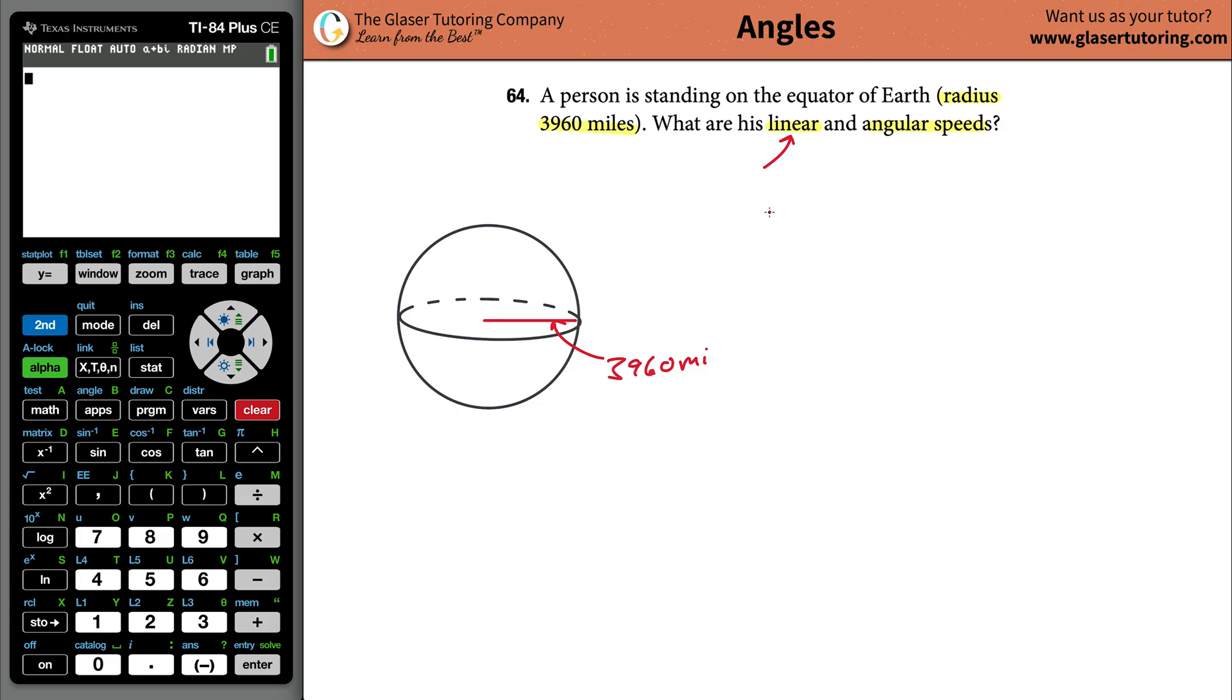Anytime you hear the word calculating a linear speed and you're talking about some object here, pretend you're at the end of this line segment, you're like a dot right there. Now if you were to travel around the Earth, the question is how far would you have traveled linearly? How do you find that out?